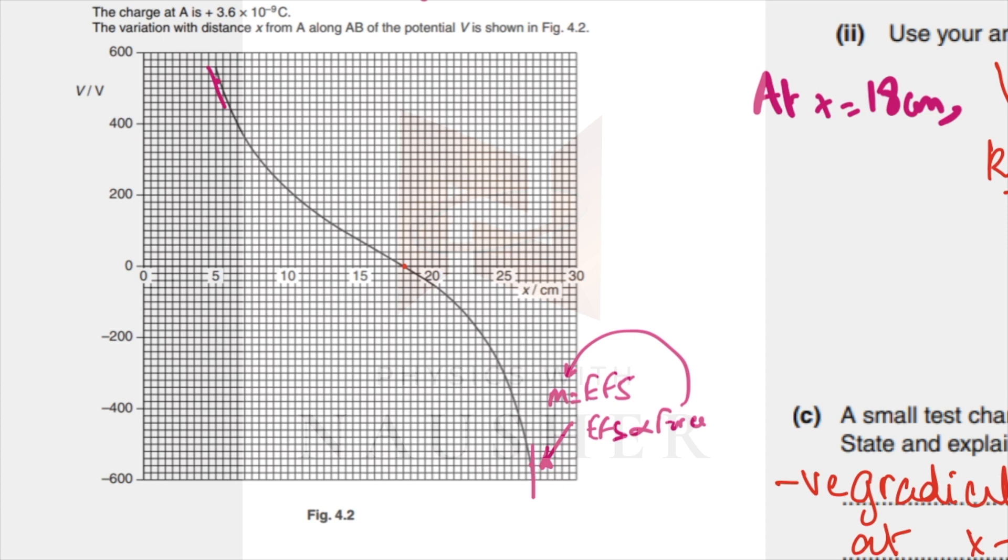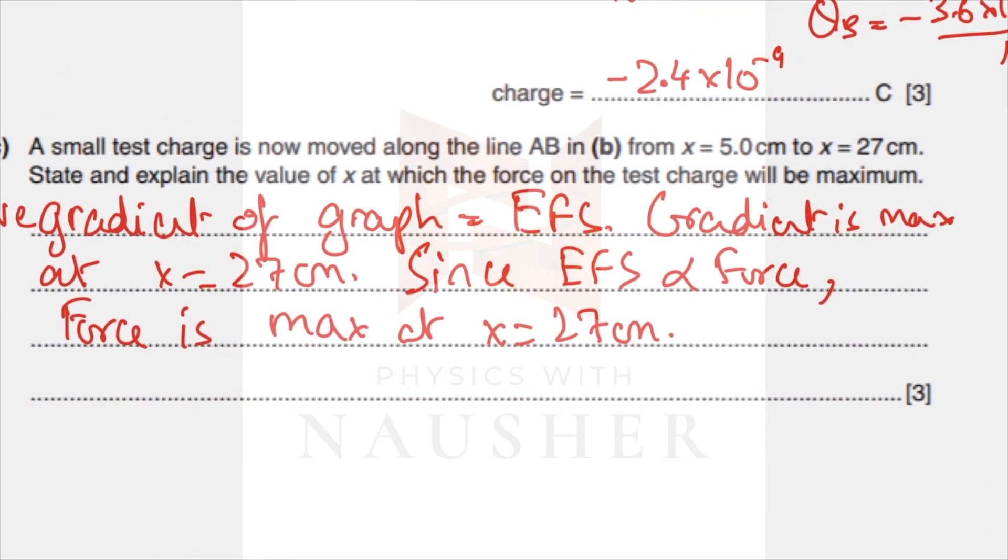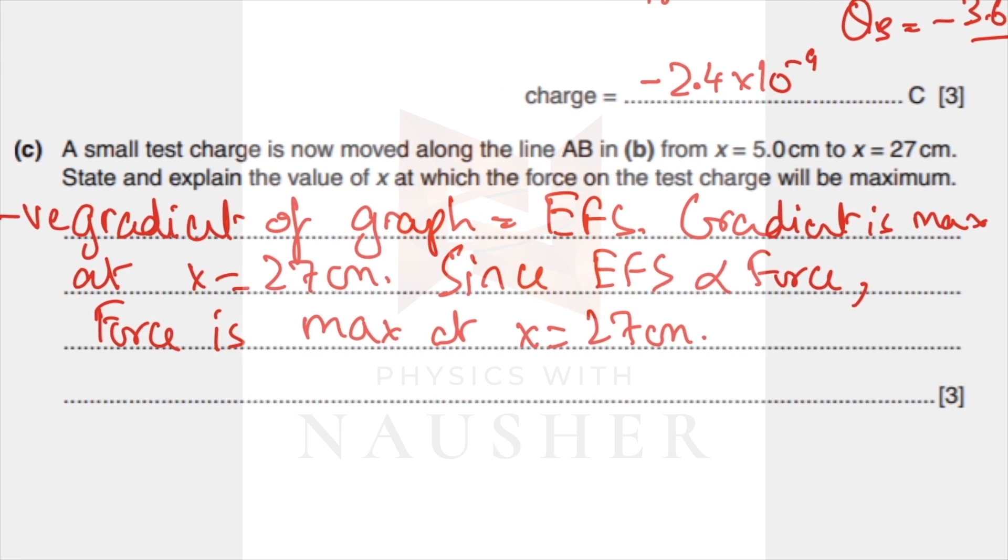Let me show you the answer. The negative gradient of the graph gives you the electric field strength. Gradient is maximum at x equals 27. Since electric field strength is proportional to force, therefore the force is maximum at x equals 27 centimeters.